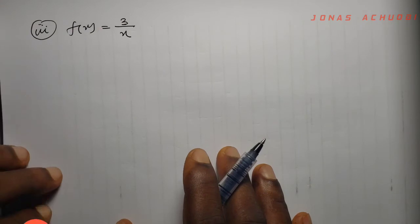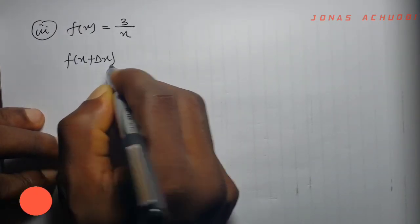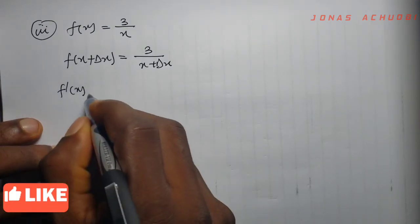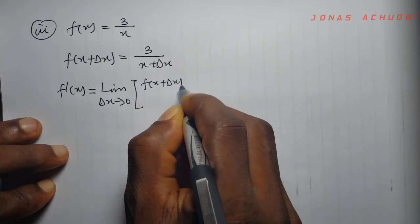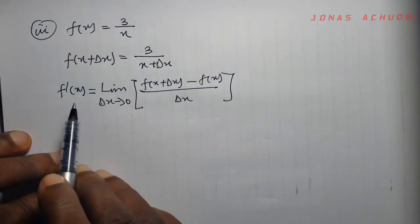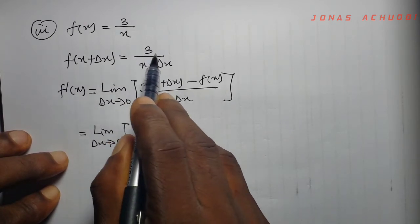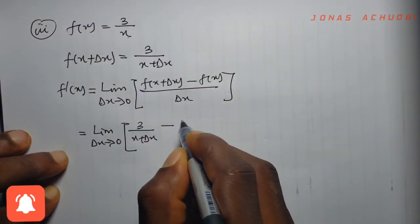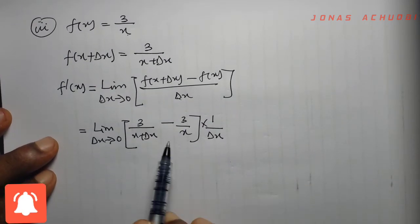As our last example, we consider the function f of x equal to 3 over x. We want to differentiate this function from first principle. So f of x plus a change in x is equal to 3 over x plus change in x. The derivative f prime of x is equal to the limit as change in x tends to 0 of f of x plus change in x minus f of x, divided by change in x. So if we plug in our values, the limit as change in x tends to 0 of 3 over x plus change in x, minus 3 over x, times 1 over change in x.